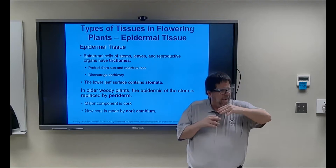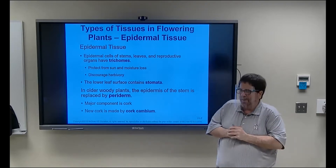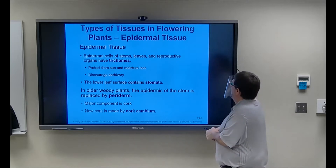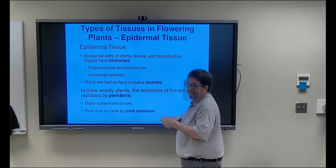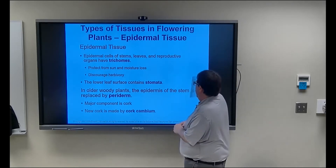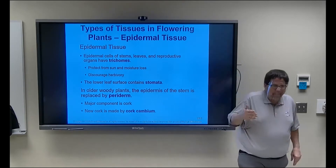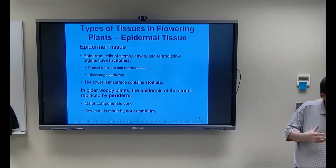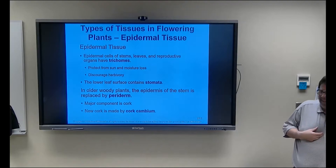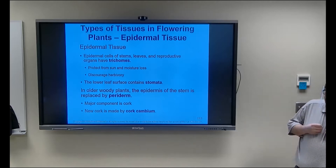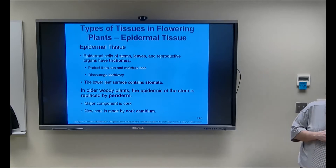Trichomes are hair-like structures over the stomata that protect them from direct sunlight and moisture loss. Some of them produce chemicals to discourage herbivores or kill insects that try to eat the plant. And of course the stomata — the opening on the bottom of leaves that opens up for gas exchange. Plants open the stomata to let oxygen out (what they make) and bring in carbon dioxide to build sugar. This is also where they evaporate water.